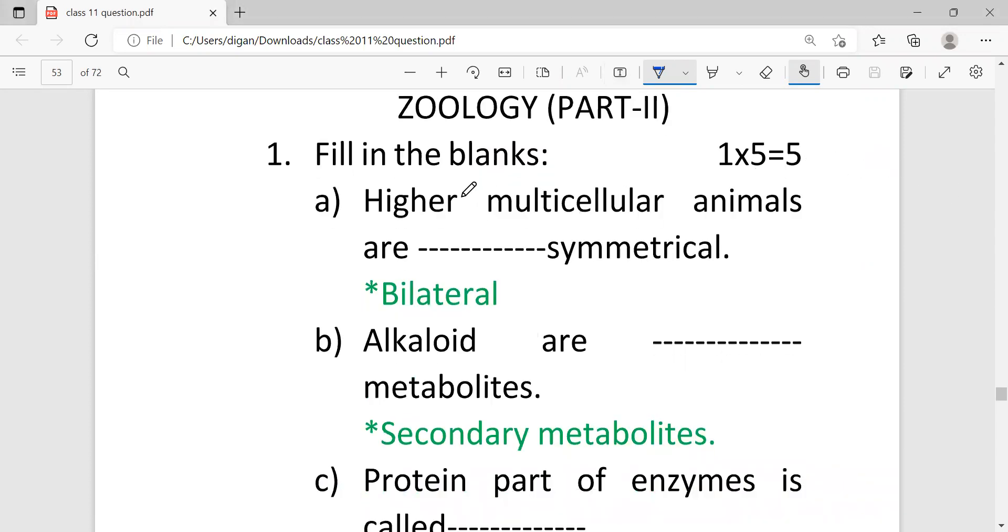First question: fill in the blanks, carrying five marks. Higher multicellular animals are symmetrical. The answer should be bilateral. Bilateral symmetrical means they can be equally divided into two parts.